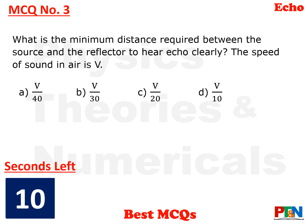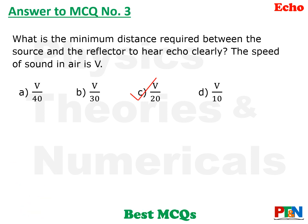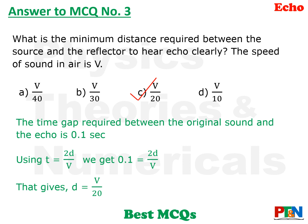Next MCQ: What is the minimum distance required between source and reflector to hear echo clearly if the speed of sound is v? You must give the answer in terms of v. The answer is v/20. Using the same formula t = 2d/v with t = 0.1 seconds, d = v/20. So whatever the speed of sound, divide it by 20 to get the minimum distance. If v = 340, dividing by 20 gives 17 metres, consistent with the previous MCQ.